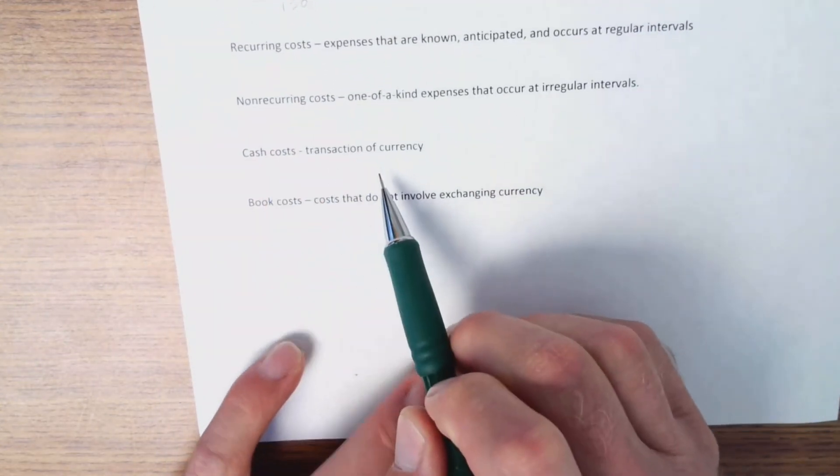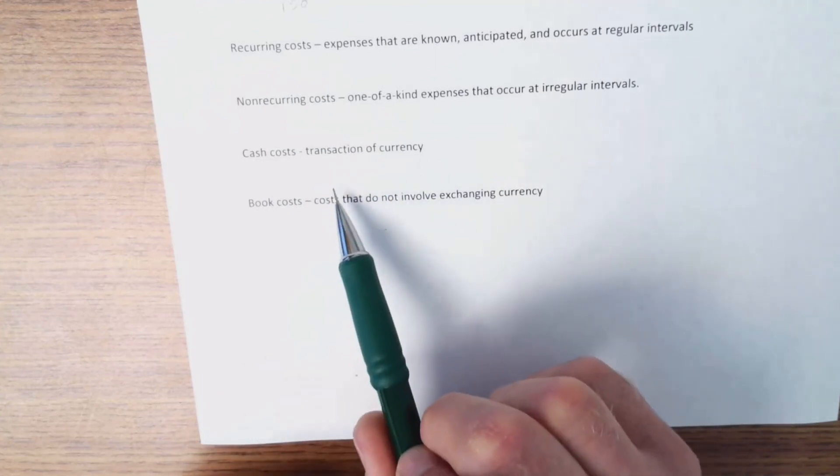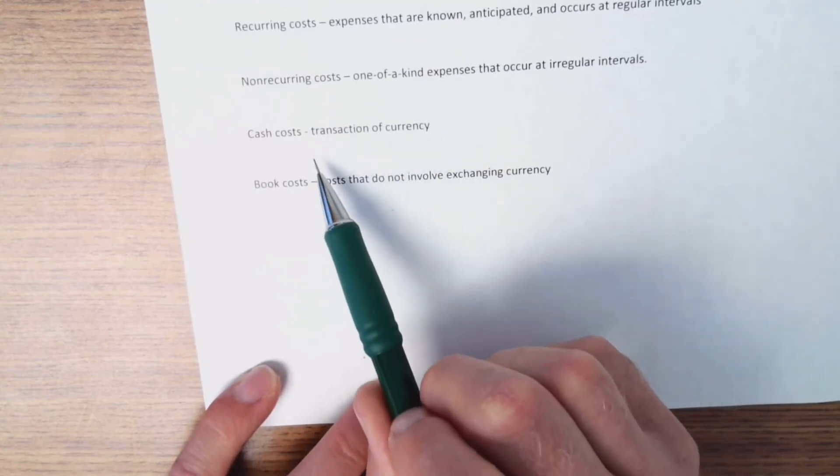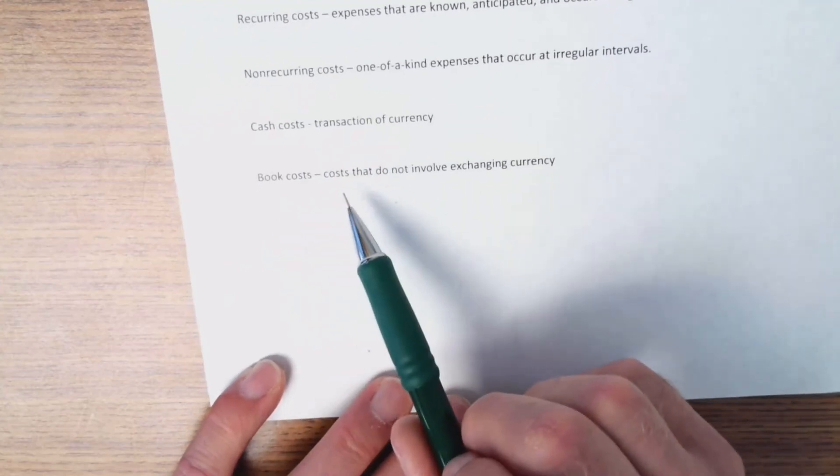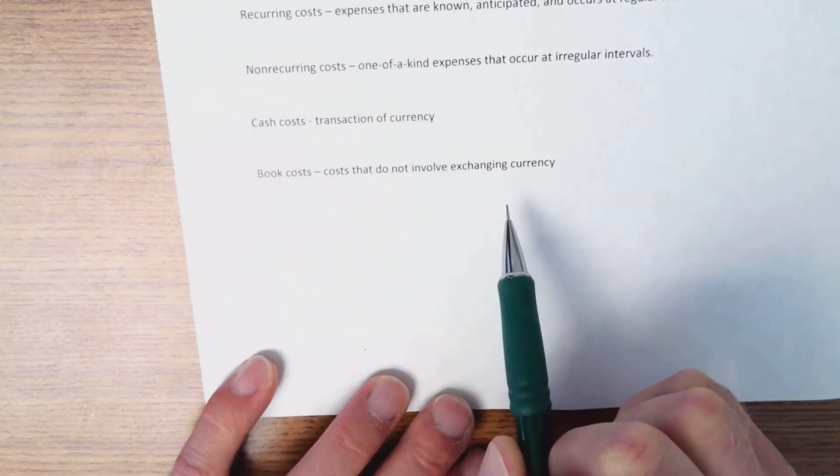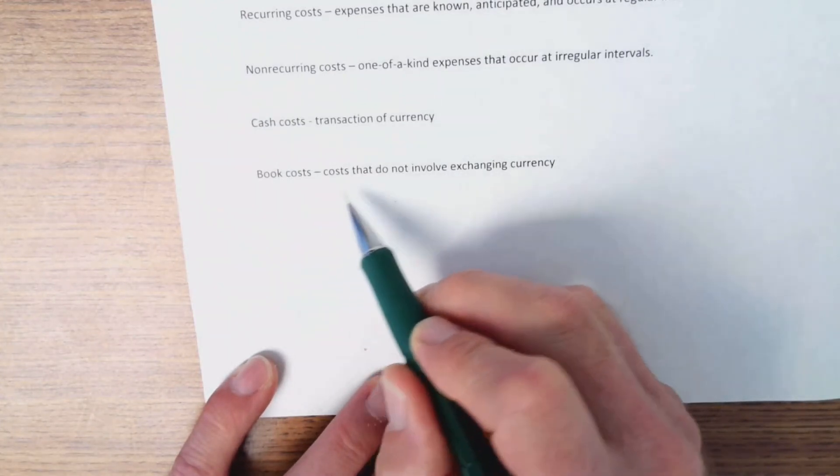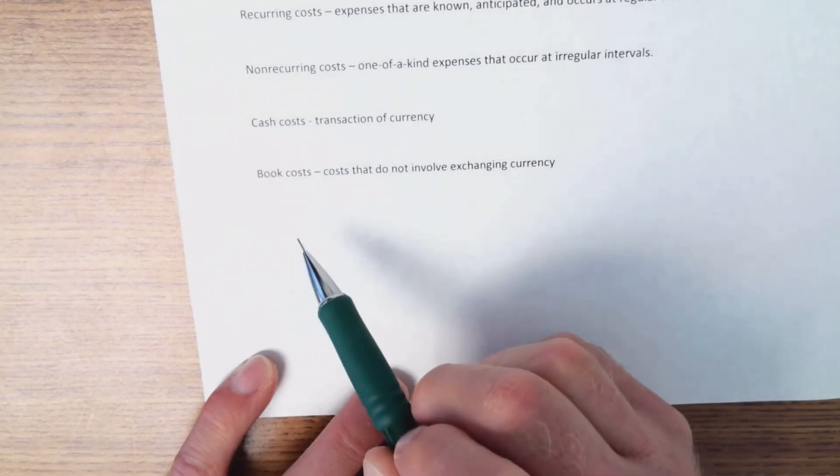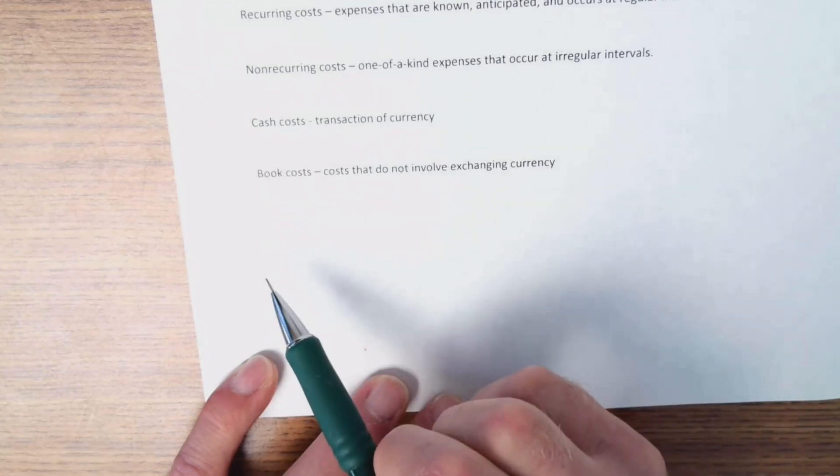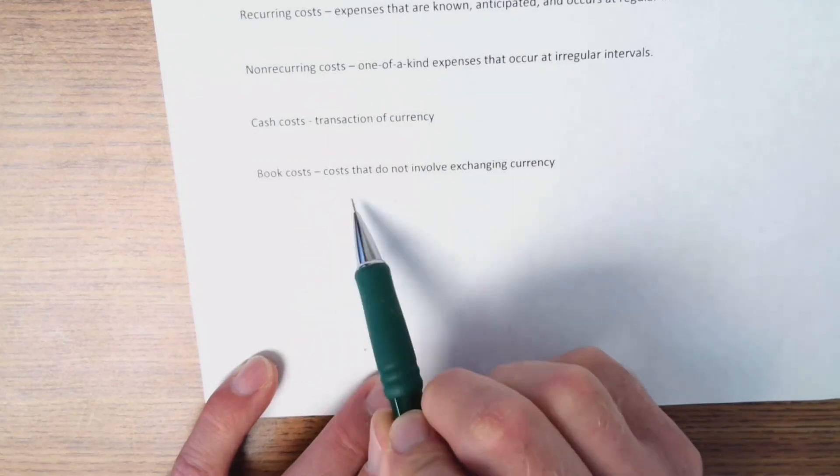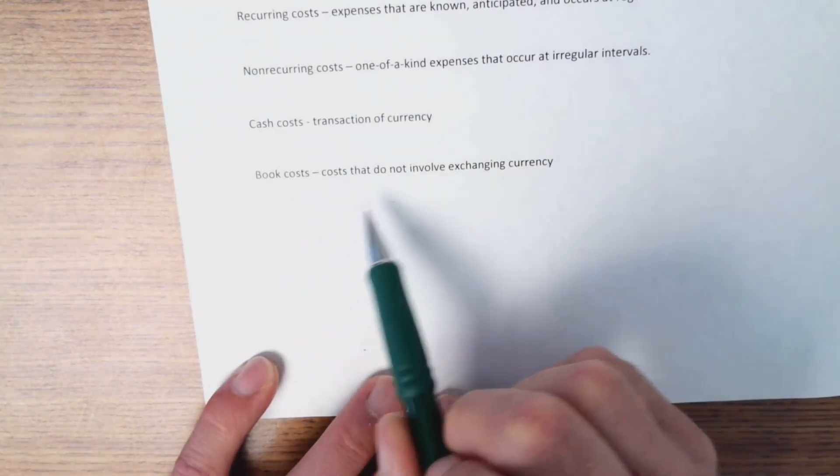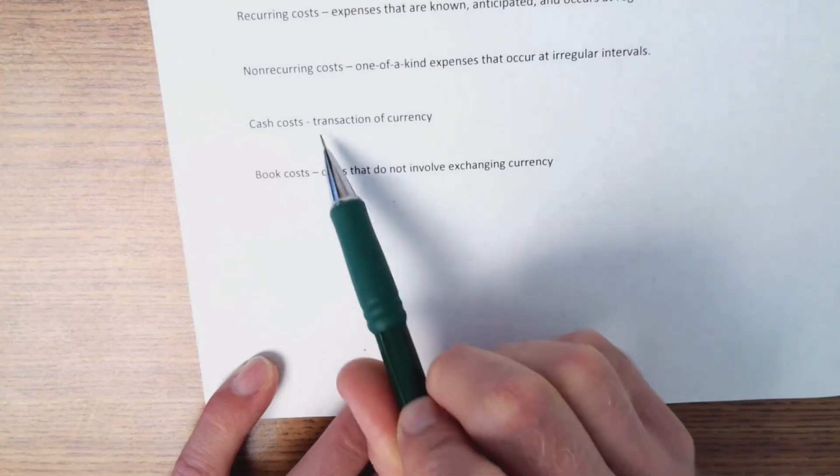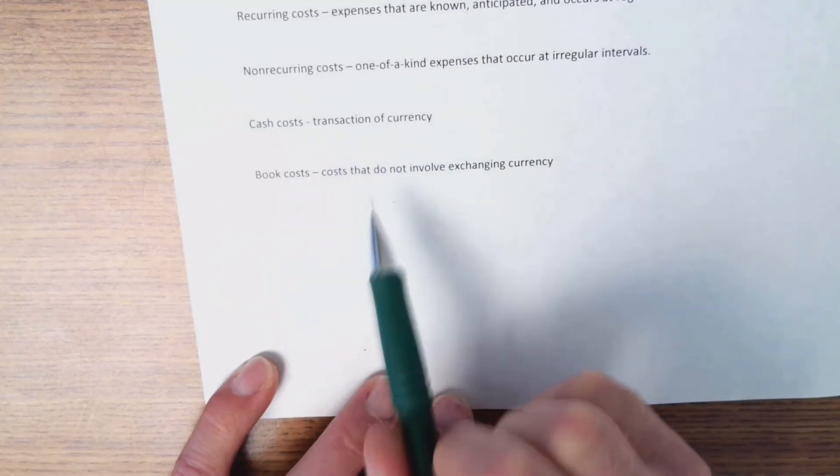And cash costs. That's the transaction of currency. You actually buy something, and it has a value that you pay for. Book costs are costs that do not involve exchange of currency. So, a lot of this is like depreciation. So, if we buy a property for $100,000, and we depreciate $10,000 off for the first year, that's a book cost. We didn't spend any money, we just depreciate the cost. That happens a lot with cars. Businesses buy cars or properties. You can depreciate things, and that's a whole game you play on your taxes. But, it doesn't involve a transaction of currency. It's just an accounting thing.